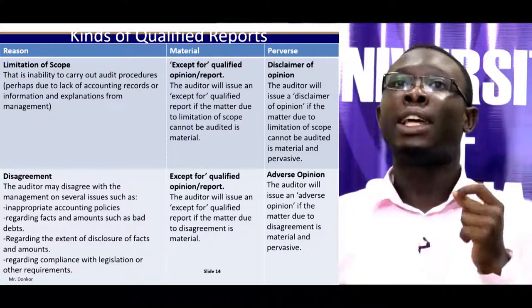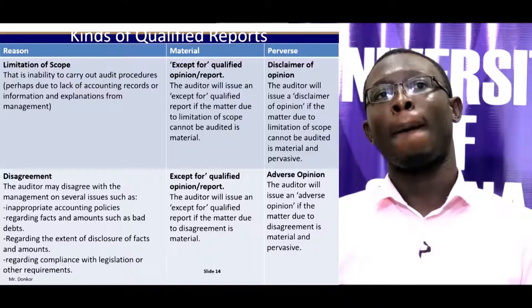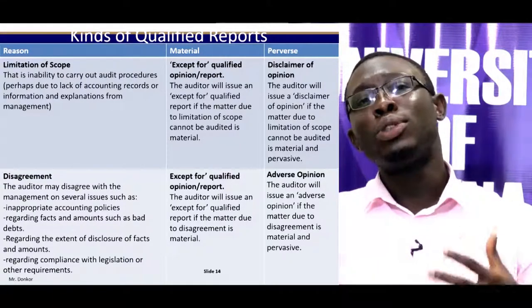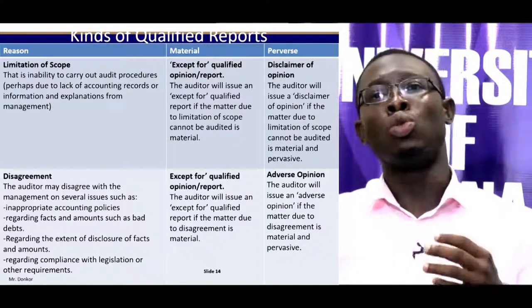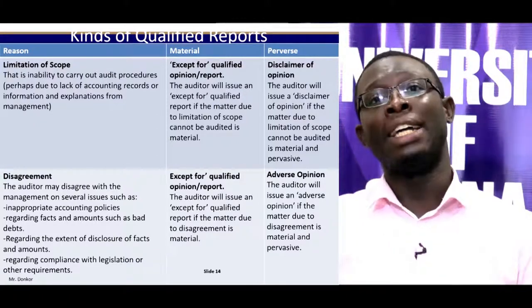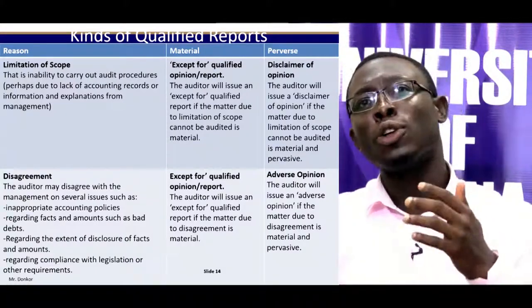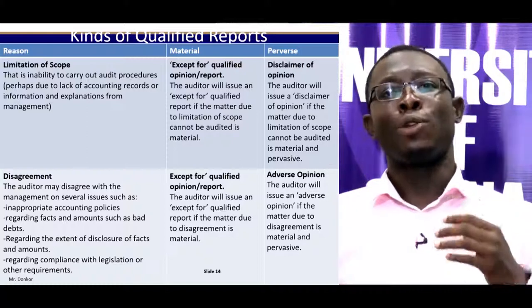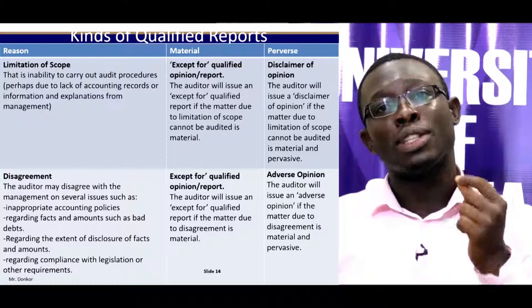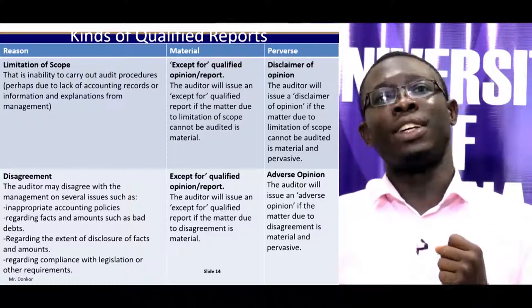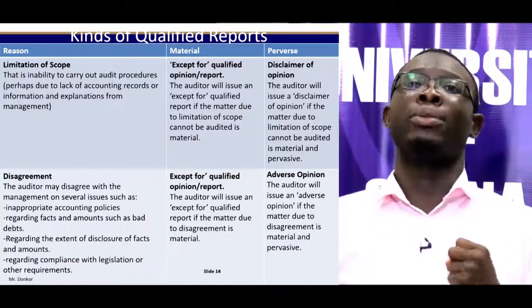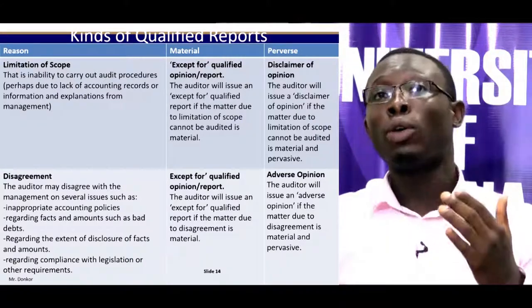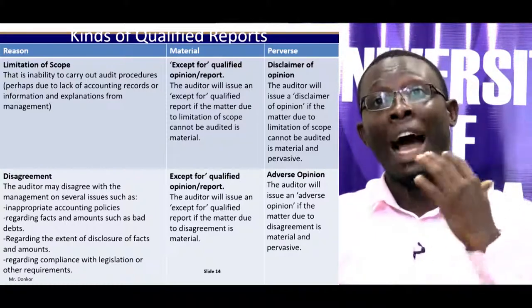If the limitation of scope is both material and pervasive — that is, the possibility of it affecting the financial statements is so significant — then the auditor will issue a disclaimer of opinion. For disagreement, if the auditor disagrees with management on an issue that is only material, the auditor will issue an except-for qualified audit report. But if the disagreement is both material and pervasive, the auditor will issue an adverse opinion. To summarise: consider whether the issue is due to limitation of scope or disagreement, and whether it is material or pervasive, to determine whether the qualified report will be an except-for, a disclaimer of opinion, or an adverse opinion.